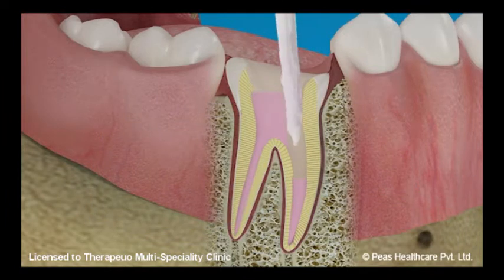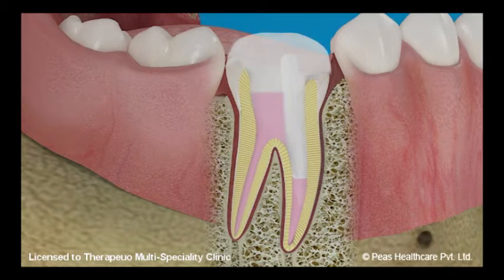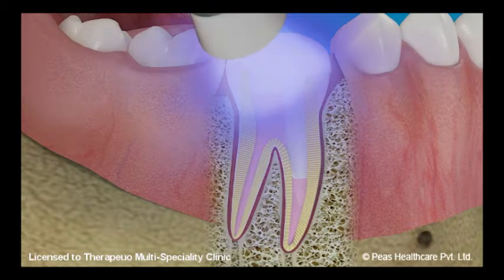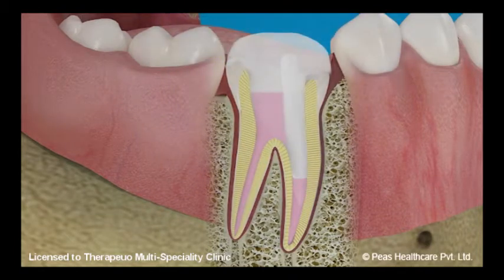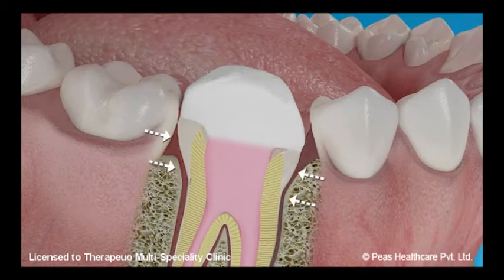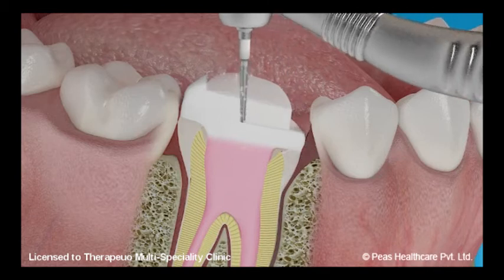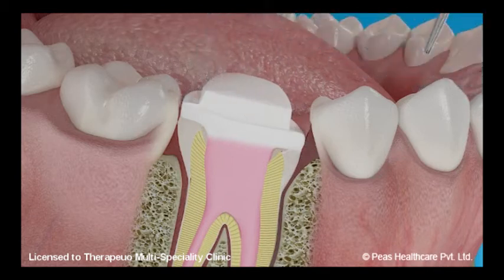An adhesive is applied to the walls of the root canal. A special cement is then mixed and the post is bonded to the root canal walls. After the post is in place, a composite-based material is used to build up the lost tooth structure. A post and core helps in strengthening the remaining tooth structure and prevents further breakage. The core is then shaped to receive a crown.